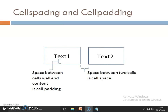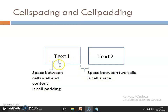Here we have two cells. My first cell value is text1 and the second cell value is text2. The space between these two cells is known as cell spacing, and the space between the text value and the cell border is known as cell padding.